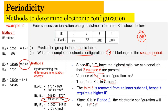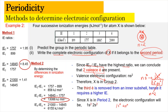Since X is in period 2, the principal quantum number N equals 2, meaning the valence configuration of Ns2 corresponds to 2s2. The complete electronic configuration is therefore 1s2 2s2. This accounts for 4 electrons total, which matches the 4 successive ionization energies given in the problem.